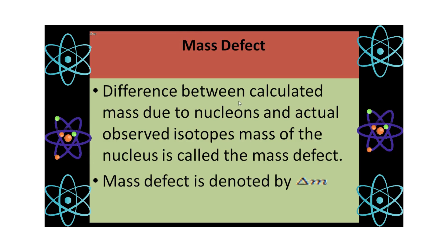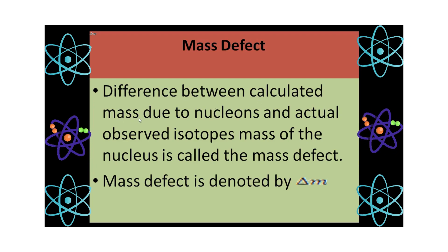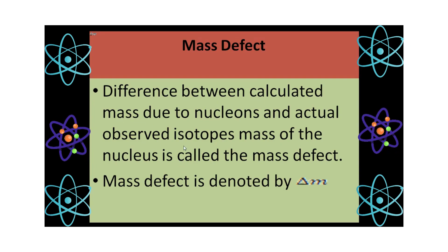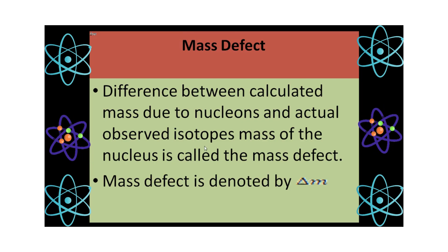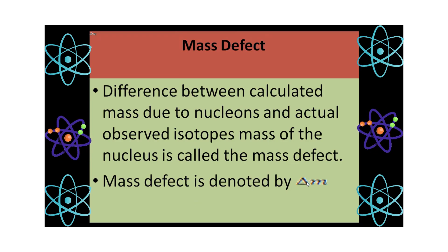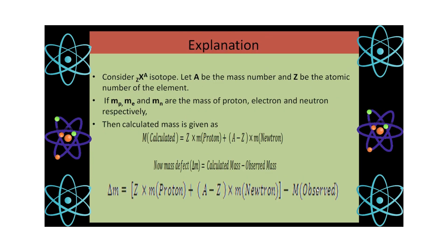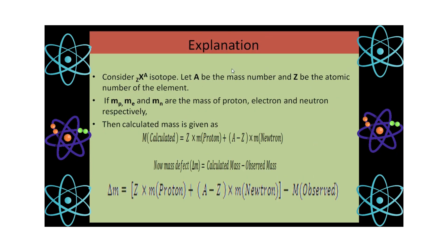So let us learn mass defect. Mass defect is the difference between the calculated mass and the observed mass of the nucleus. This calculated mass is different from the observed mass of the nucleus, and the difference we get is called the mass defect. Mass defect is denoted by delta M. Let us see how we can calculate the mass of the nucleus.